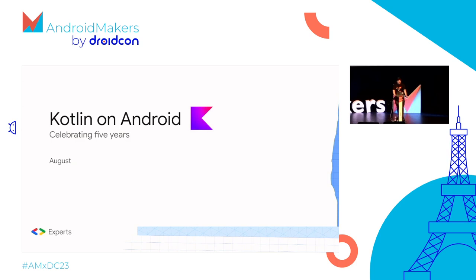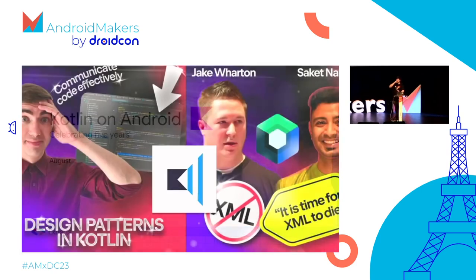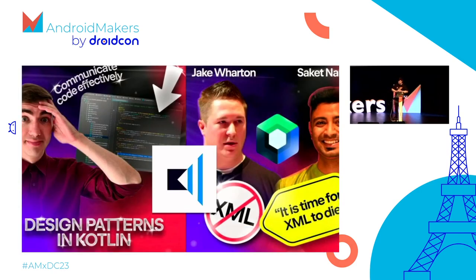We also celebrated five years of Kotlin on Android. It was in 2017 at the Google I/O keynote that Kotlin was announced as a primary language, which was amazing. It's been quite interesting to see how much the ecosystem has evolved and adopted Kotlin. I can't even imagine writing a single line of Java code anymore. There are some great episodes from Talking Kotlin with Jake Wharton and Sackett — a podcast I recommend subscribing to.